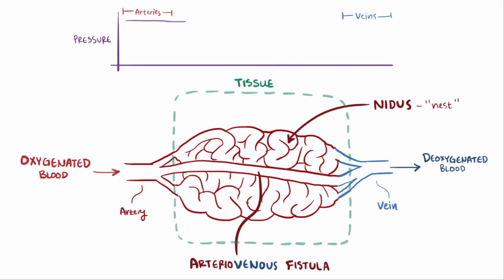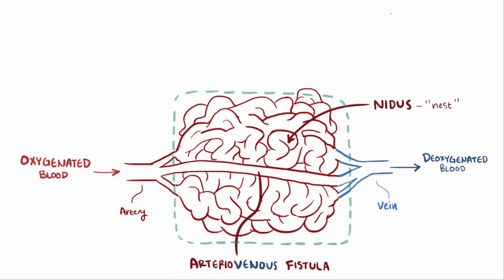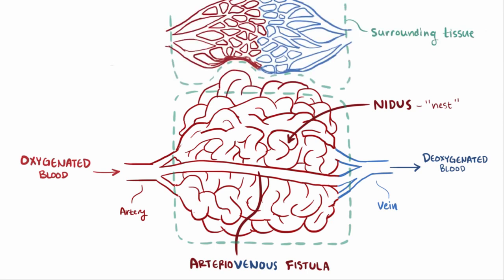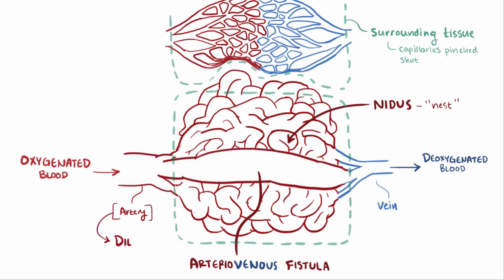In AVM, the arteries and the veins are both under high systolic blood pressures because there are no capillaries to dampen the pressure, which means that the AVM can expand in size over time and can put pressure on the surrounding tissue. This pressure on surrounding capillaries can pinch them shut and prevent that functional tissue from getting blood flow. Also the high pressure causes the arteries supplying blood to dilate, while the veins thicken and undergo fibrosis.